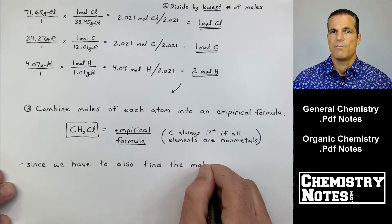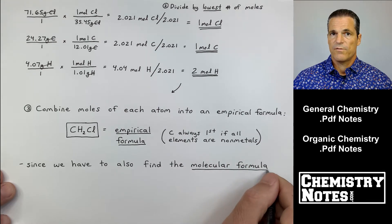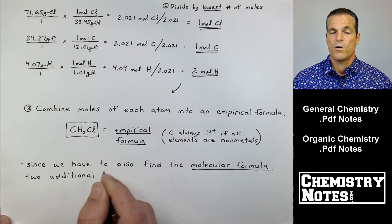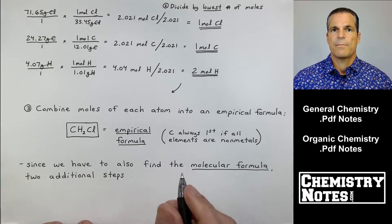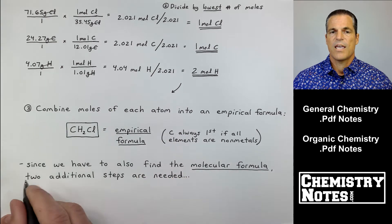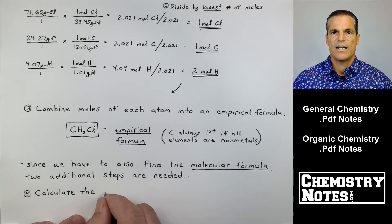It says there in parentheses what I already said: carbon always first if all the elements are non-metals. Now since we have to also find the molecular formula, there's two additional steps. Usually it's just steps one, two, and three to find the empirical formula. These two next steps are relatively straightforward. They gave us the molar mass, 98.96 or something like that.